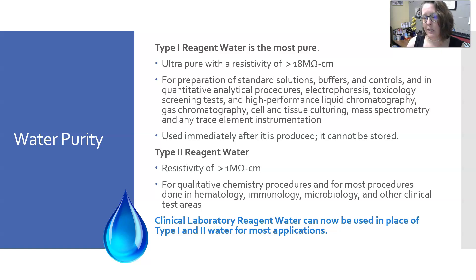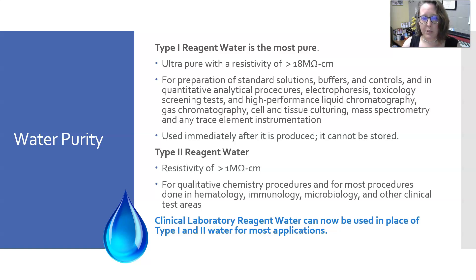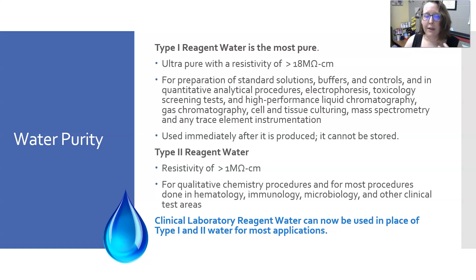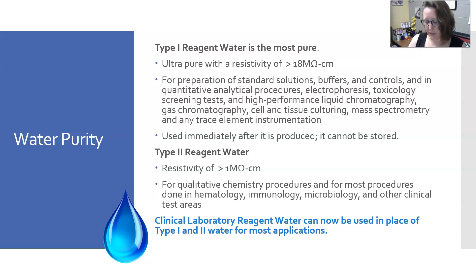Usually, instruments that need Type 1 water have a feed that supplies the analyzer directly so it can use the ultra-pure reagent water. Type 2 reagent water requires a resistivity of greater than 1 mega-ohm per centimeter. It is used for qualitative chemistry procedures and for most procedures done in hematology, immunology, microbiology, and other clinical test areas. Clinical laboratory reagent water can now be used in place of Type 1 and Type 2 water for most applications.